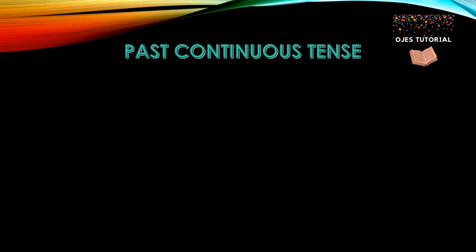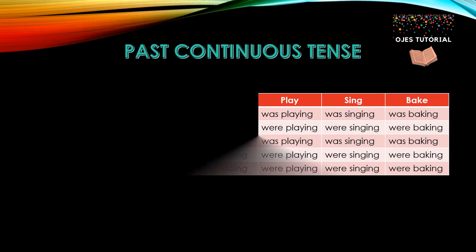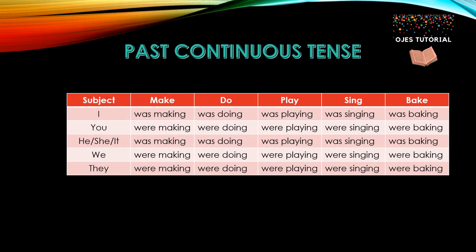Now, let's see the forms of past continuous tense. This table shows the past continuous tense of five verbs: make, do, play, sing, and bake. For make: I was making, you were making, he/she/it was making, we were making, and they were making. Following this format, we make the past continuous tenses of the other four verbs — do, play, sing, and bake.